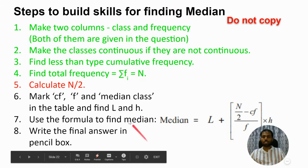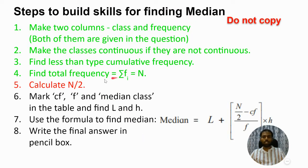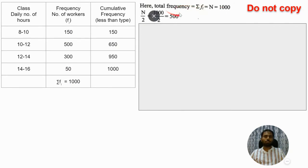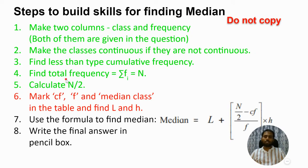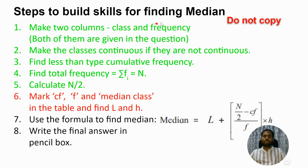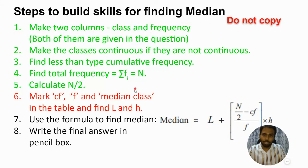Step five: calculate n divided by 2. n equals summation fi, which was 1000, so n divided by 2 is 1000 divided by 2, which is 500. Step six is the most important step — if you can do step six well, finding the median will be very easy. Pay full attention now.